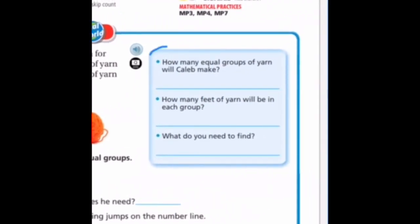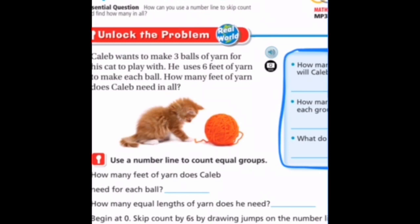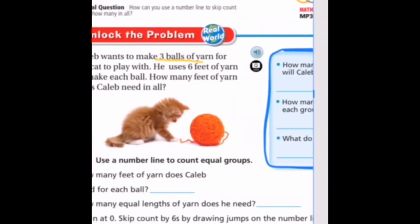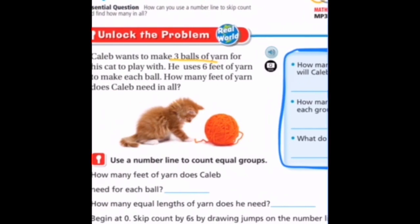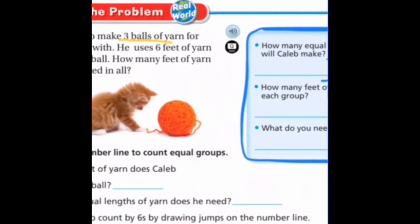So, the first thing we're going to do is look at the blue box here. How many equal groups of yarn will Caleb make? Well, he's making three balls of yarn, so it's going to be three equal groups then. How many feet of yarn will be in each group? Six feet of yarn in each group.